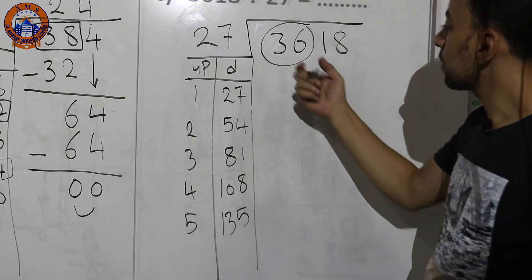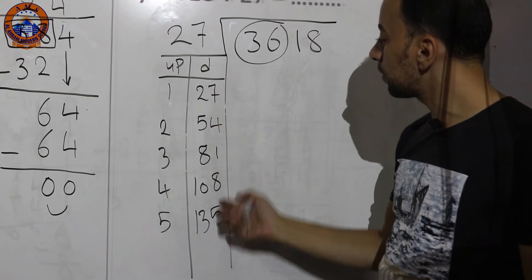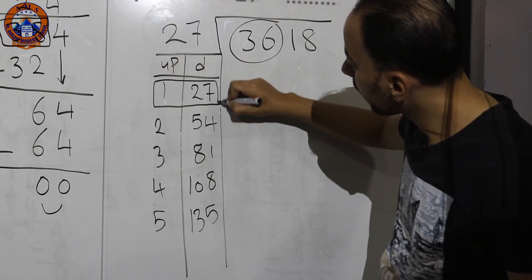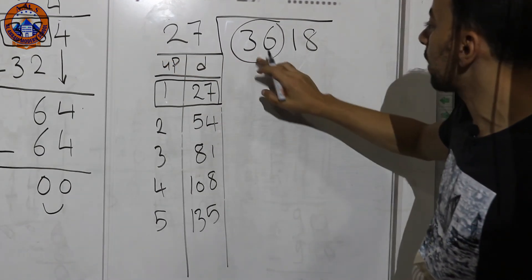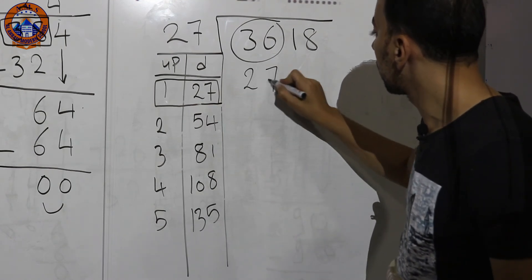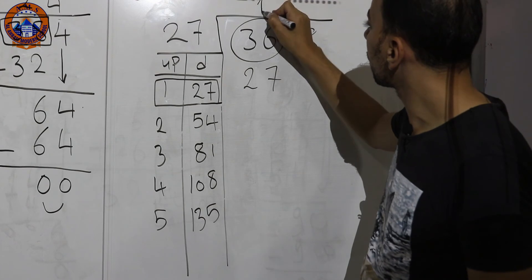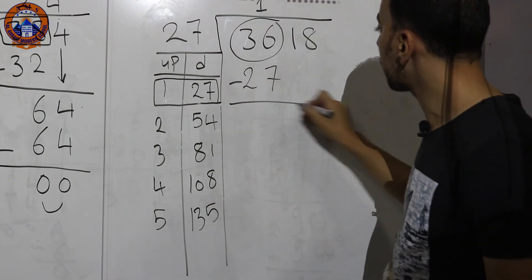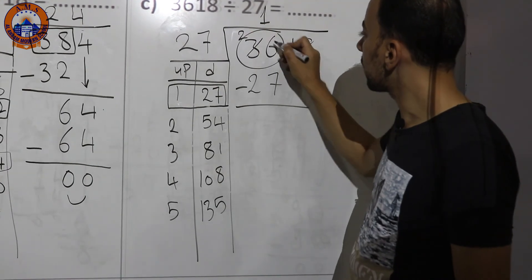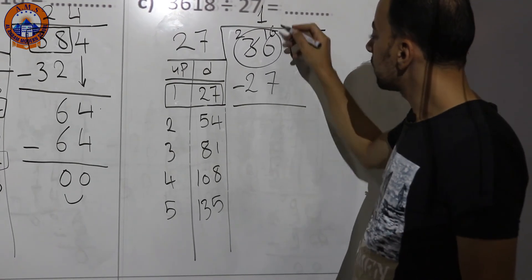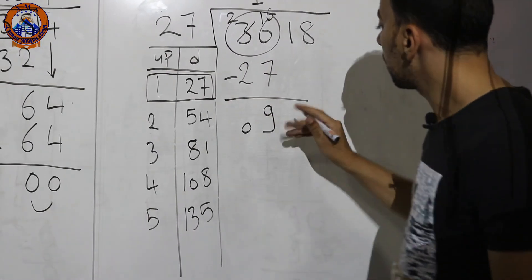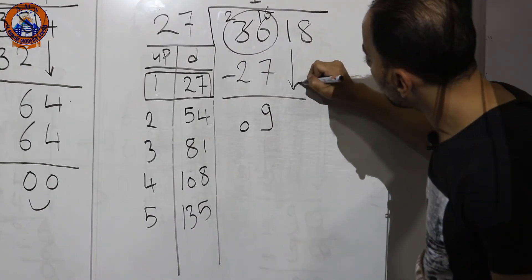Take two digits from inside: 36. Search for 36 in the table — not found, but the nearest is 27 (can't take 54, it's bigger). Put 27 down and 1 up. Subtract: 6−7 can't be, so borrow — 16−7=9, then 2−2=0.